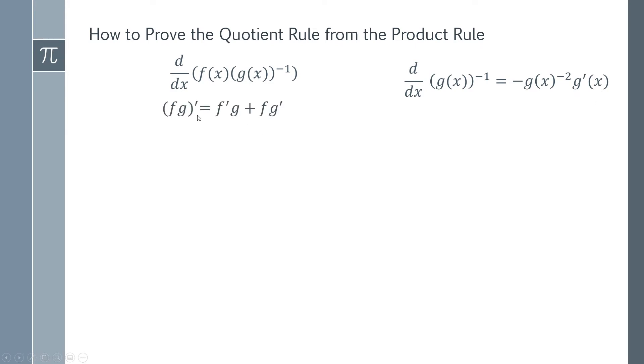We've got the product rule so we can just go step by step through the product rule for this function. We start by finding f', which is simply the function f(x) with a dash on it. Then we times that by our function g, which in this case is g(x) to the minus one.